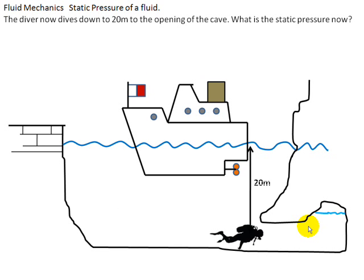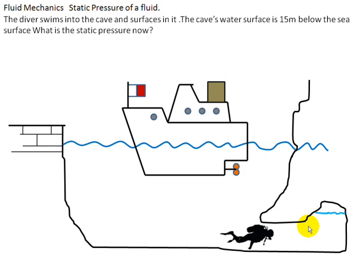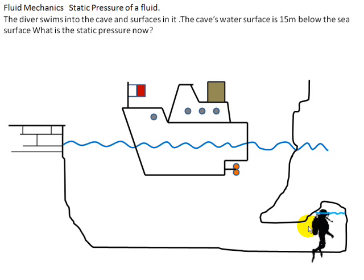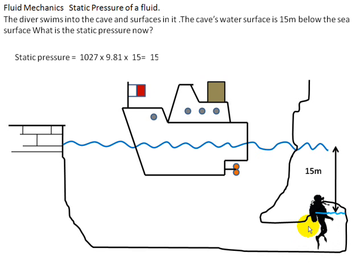He finally swims inside the cave and surfaces inside it. Since there is air, the cave has no opening to the outside. The water surface inside the cave is 15 meters below the sea surface. What is the pressure now on the gauge? We use ρgh and get the answer. The pressure is not zero in the air chamber because the cave is sealed from the atmosphere and is under pressure.